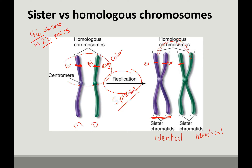Sister chromatids are identical — the purple pair are identical, the green pair are identical. So if one carries brown eye color, the sister also carries brown eye color; if one carries blue eye color, so does the sister. Eventually we will split these sisters so that each new daughter cell has a set of brown and blue.